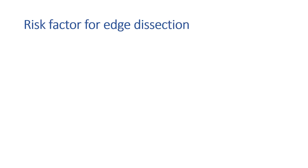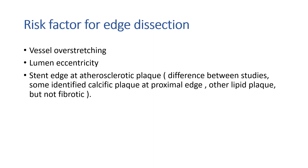What are the risk factors for edge dissection? Vessel overstretching is important, as is lumen eccentricity, and stent edge placement at an atherosclerotic plaque. The type of plaque varied among studies — some found that calcific plaque at the proximal edge was significant, others found attenuated plaque at the distal edge. Overall, lipid-rich plaque was found to be significant, but not fibrotic plaque.